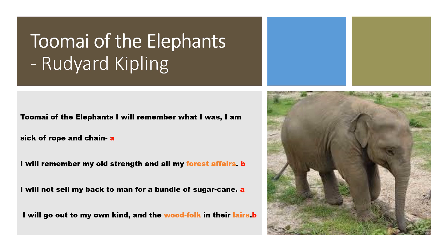Now let us read the poem to get a clearer picture. 'Toomai of the elephants, I will remember what I was. I am sick of rope and chain.' Here the elephant Kalanag is talking to little Toomai. 'Toomai' here refers not to the name but to the master. The elephant is telling that he will never forget what he was in the past — full of strength and vigor — but he is sick of rope and chain, which refers to captivity and bondage.